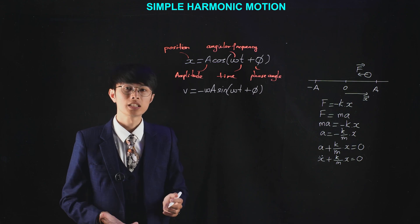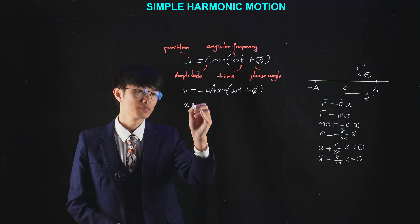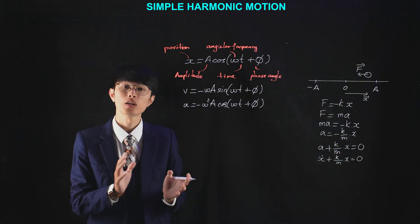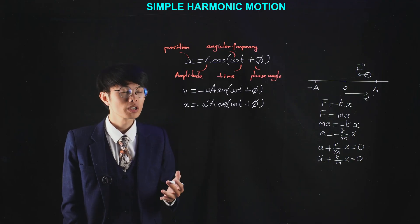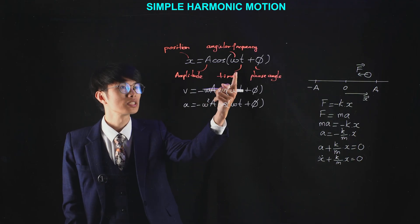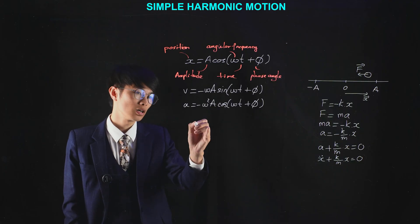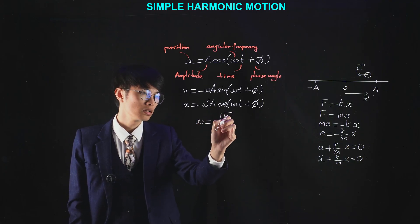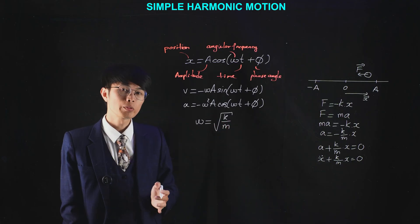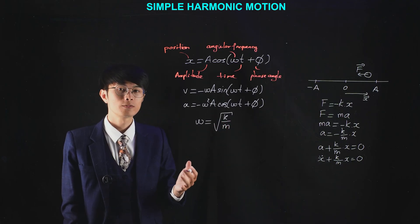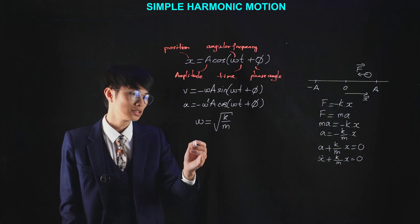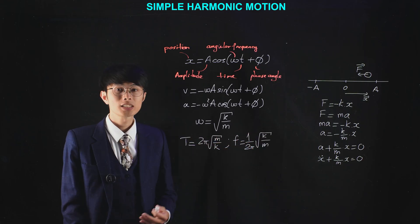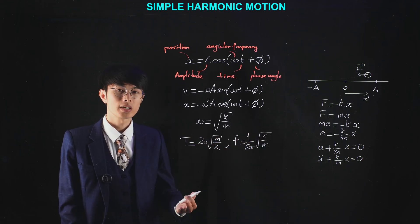And the acceleration, we take another derivative. So these are the equations for simple harmonic motion. In simple harmonic motion, the angular frequency has the formula omega equals the square root of k over m. We can also derive the formula for T and f, which are the period and the frequency. Let's look at an example to see what we can do with them.